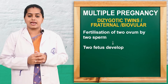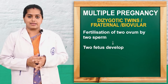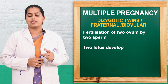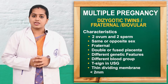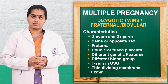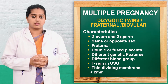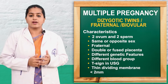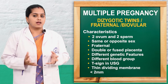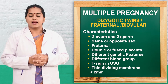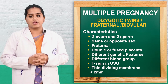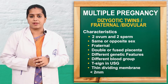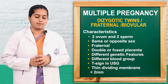Next we will discuss about dizygotic twins. Dizygotic twins are otherwise known as non-identical. They make up 80% of twins and are biovular and fraternal — they look like brother and sister. Here, fertilization of two ova with two sperm occurs in the same menstrual cycle from different sexual acts or the same act, later forming two fetuses that are non-identical. They do not have the same blood group, their characteristics are different, and they have fused or double placenta with separate membranes and separate umbilical cords. In ultrasonography, the membrane thickening will be less than 2 mm and the T-peak sign can be identified.